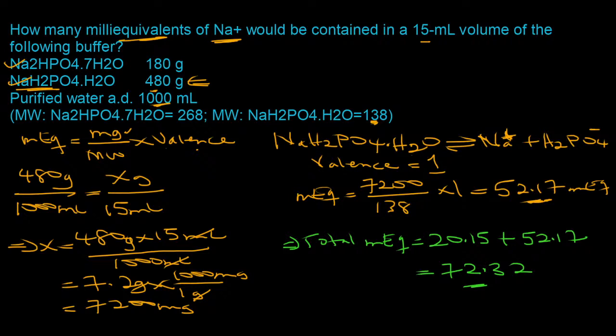That's Question 1. The key issue most people struggle with is the valence: it's always the absolute value of the charge on either the cation or the anion. If you're unsure, identify the cation first — it's usually a Group 1, 2, or 3 element like sodium here — then everything else is the anion. Let's move on to the next question.